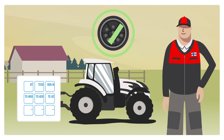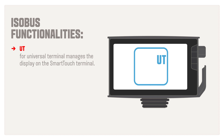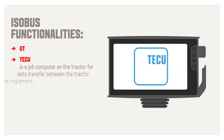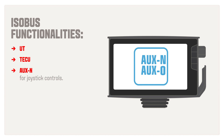Vultra can already process many of the specified Isobus functionalities completely automatically. UT, for Universal Terminal, manages the display on the Smart Touch Terminal. TECU is a job computer on the tractor for data transfer between the tractor and the implement. AuxN, for joystick controls.